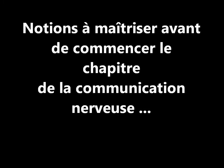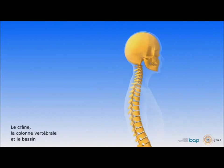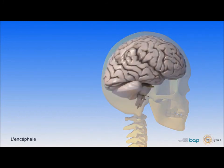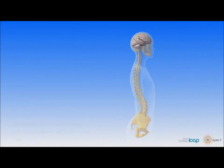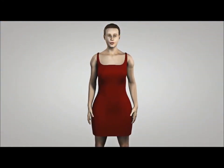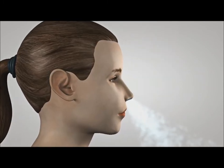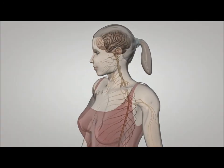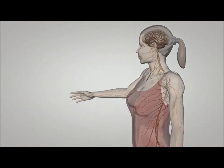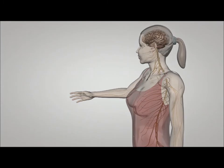L'organisme est stimulé en permanence par l'environnement. Les yeux réagissent à la lumière, le nez capte des odeurs, les oreilles sont sensibles au bruit, la langue perçoit la saveur des aliments, et la peau est sensible à la température — son contact avec les objets permet d'identifier leurs caractéristiques. Ces organes sont associés à nos sens : ce sont les organes sensoriels.